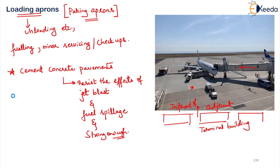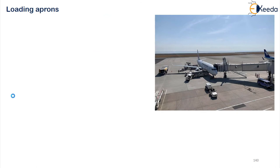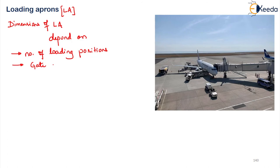Generally this loading apron dimension will depend upon number of factors. Dimensions of LA, loading apron, will depend on first the number of loading positions, how many loading positions we need. Then based on the gate positions required, where exactly your gates are required, based on that also the dimensions will depend. Then is the size of the aircraft coming into those particular areas and the type of the parking system adopted.